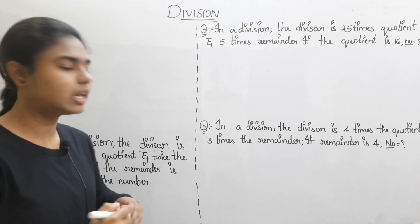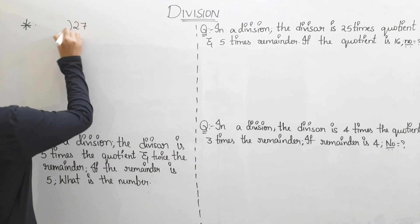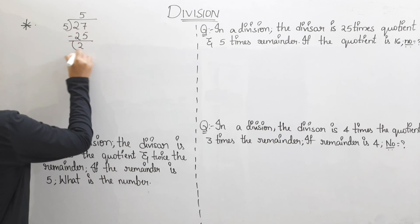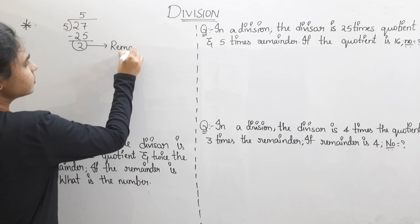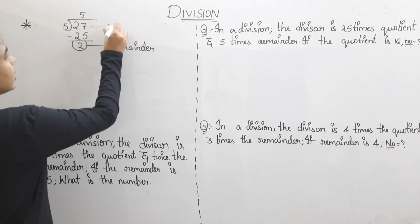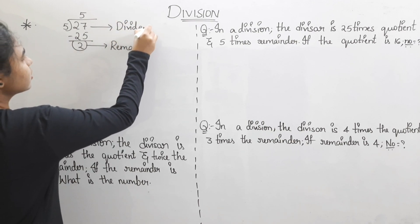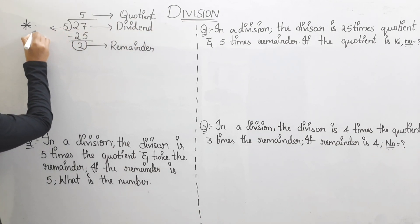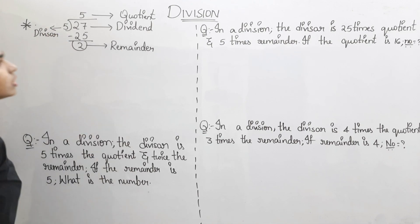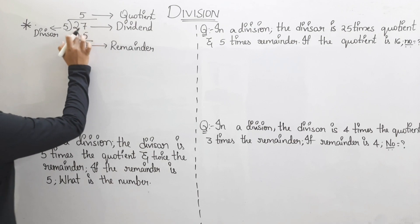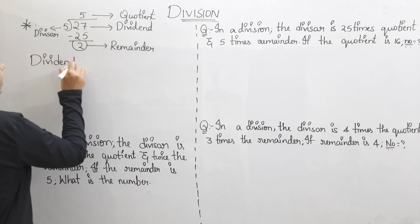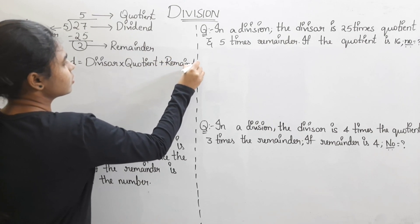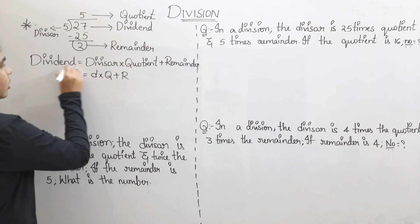Now let's talk about division. In a division sum, 27 divided by 5 gives remainder 22 — this is our dividend. The divisor, quotient, and remainder all relate through the formula: dividend equals divisor into quotient plus remainder. So capital D equals small d into Q plus remainder.